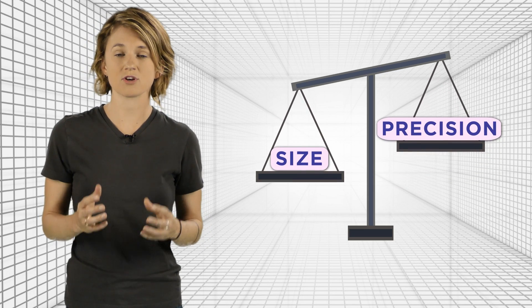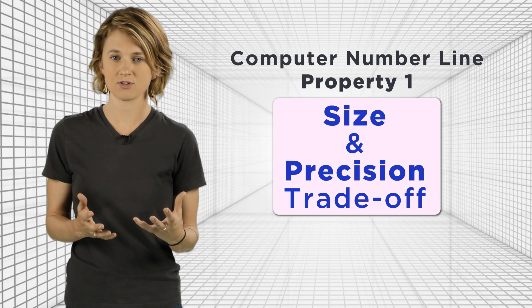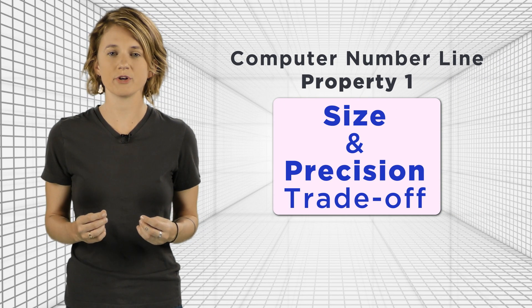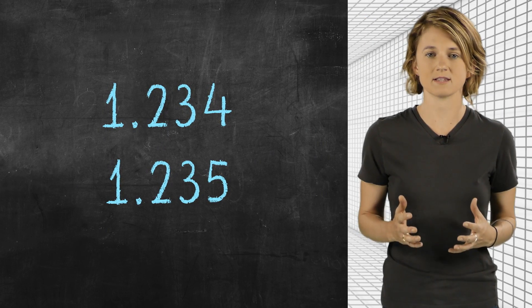That's the first interesting feature of the computer number line, a trade-off between size and precision. We'll go back to the binary world, but let's examine this trade-off in the more intuitive base 10.